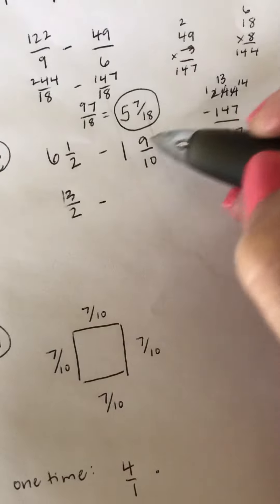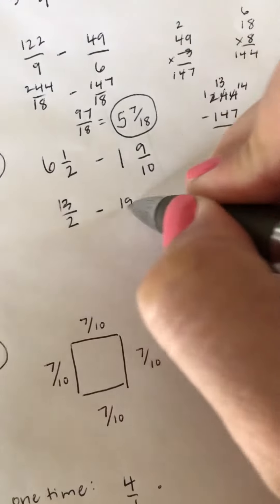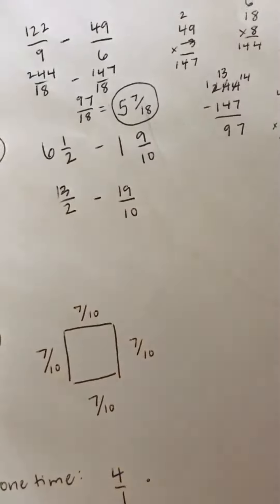10 times 1 is 10, plus 9 will be 19. Denominator stays the same, that's 10.